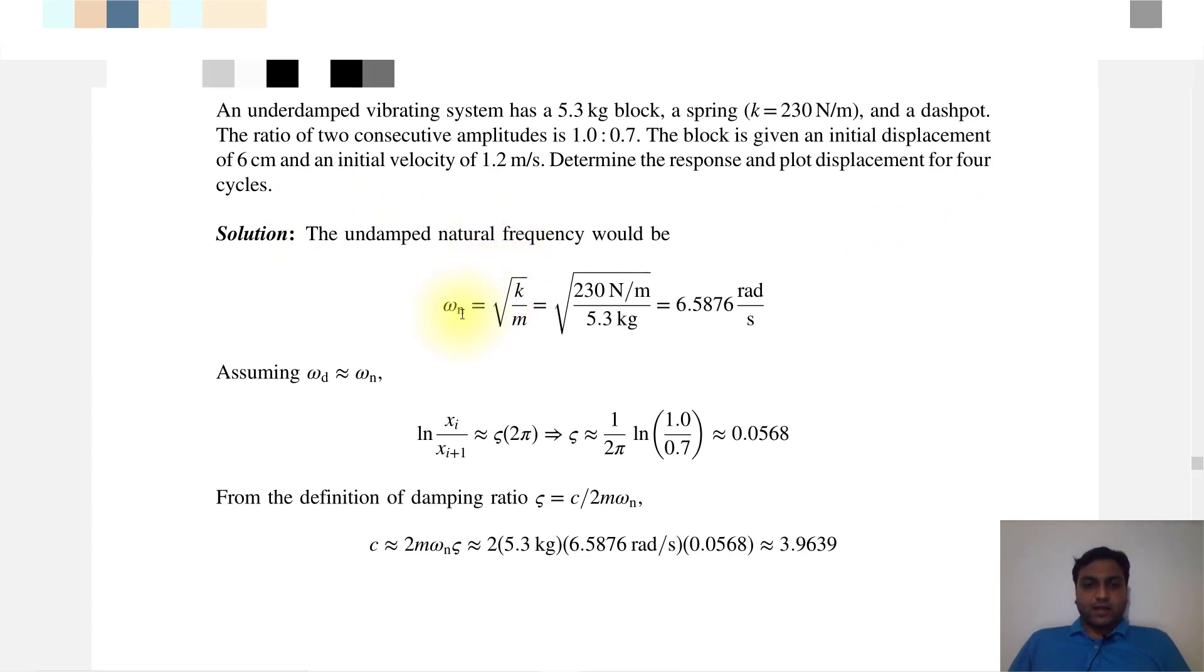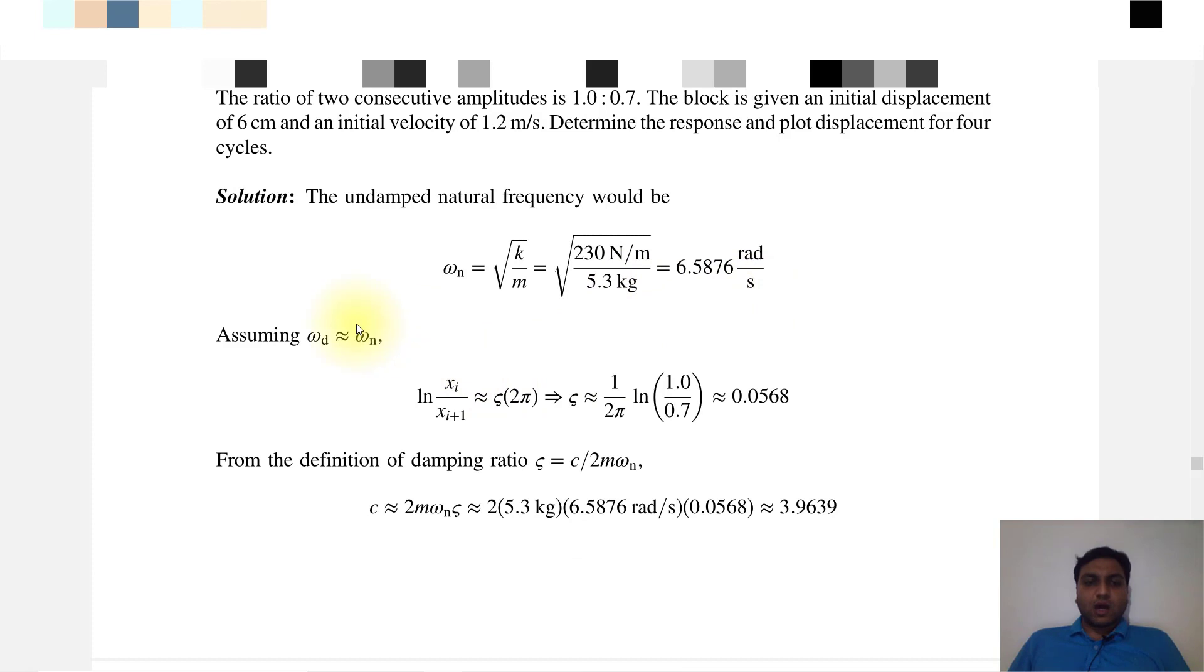The underdamped natural frequency is omega n equals the square root of k by m. k is given as 230 Newton per meter and the mass is 5.3 kg, so our natural frequency is 6.5876 radian per second.